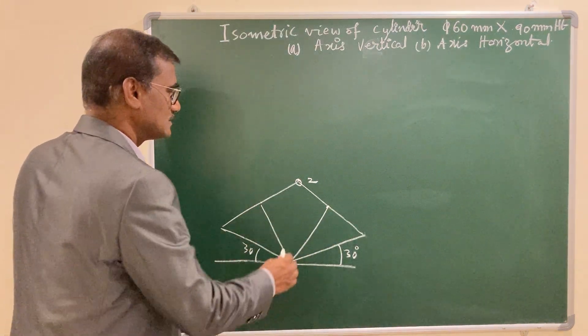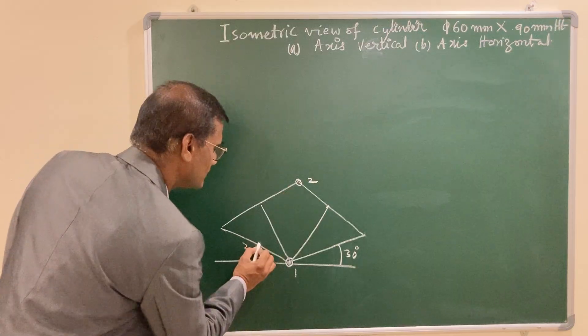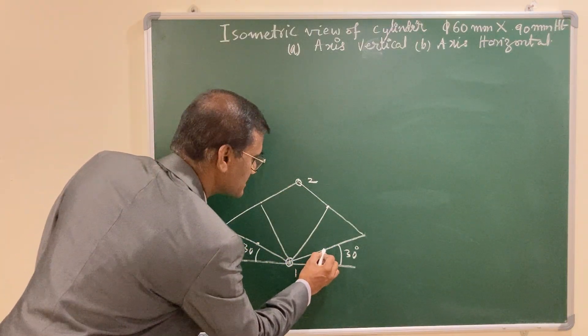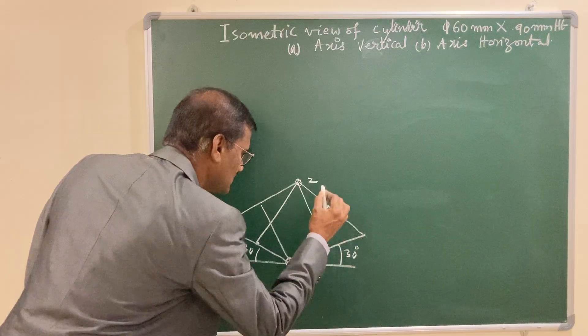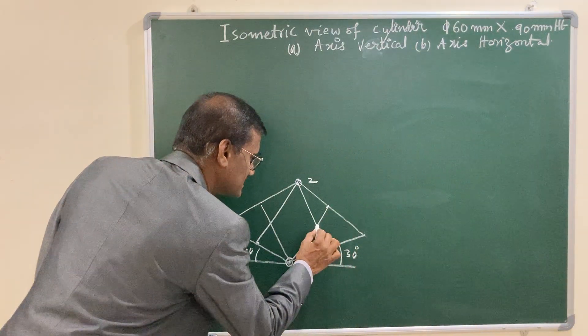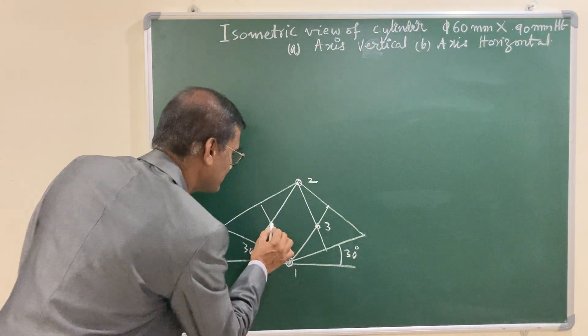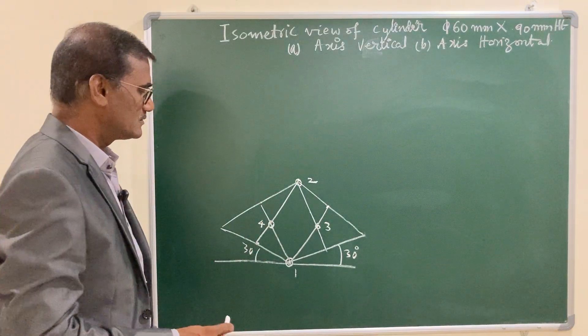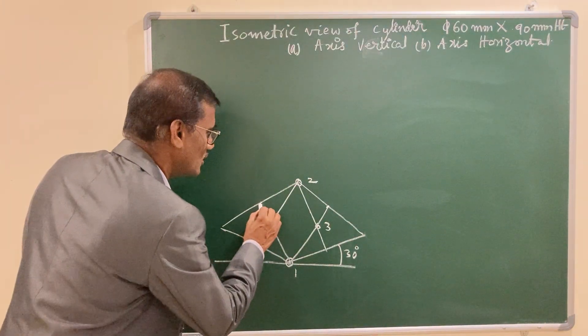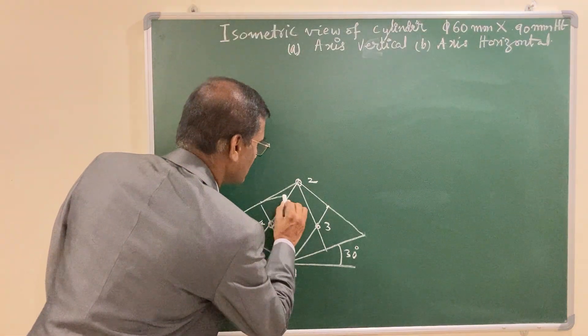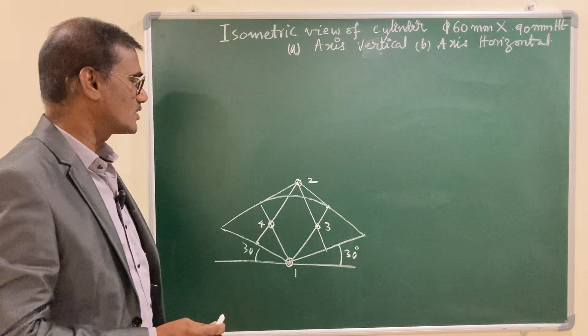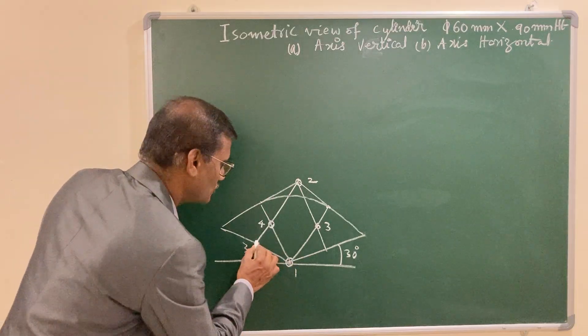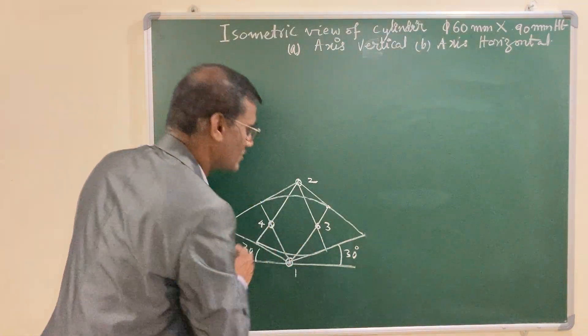Similarly join 2 with midpoints of opposite side. You are going to get 2 more centers, that is 3 and 4. So 1 as center, join these 2 points with a circular arc, and 2 as center, join these 2 points with a circular arc.